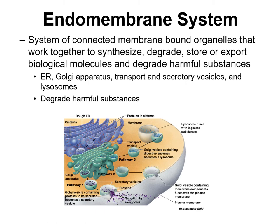Before moving to the next organelle, let's talk about the interconnectedness of many of these organelles — the endoplasmic reticulum, the Golgi apparatus, transport and secretory vesicles, and lysosomes. Collectively, this system of connected membrane-bound organelles and vesicles works together to synthesize, degrade, store, and export biological molecules, and also to degrade harmful substances. We refer to all of these organelles and vesicles collectively as the endomembrane system.